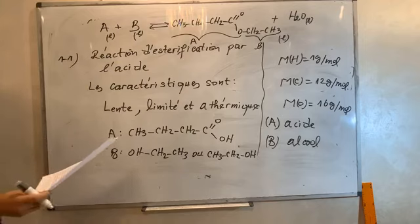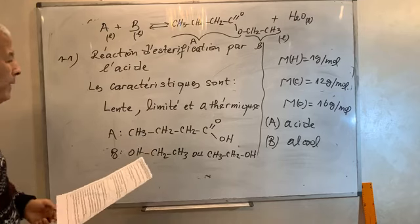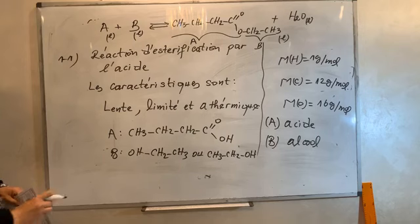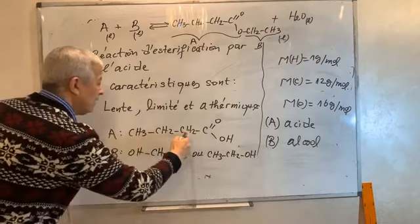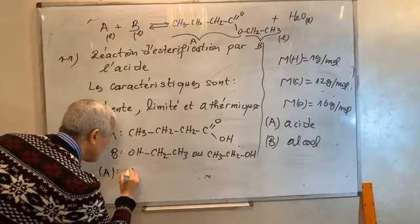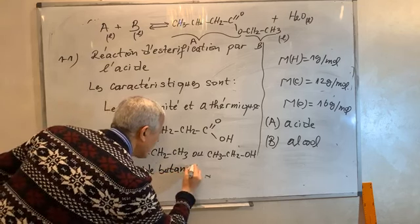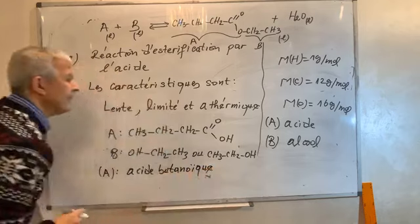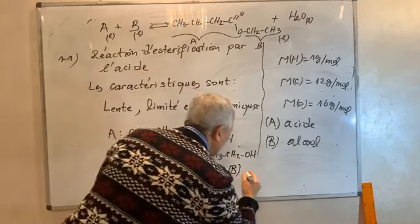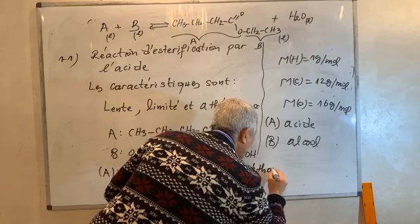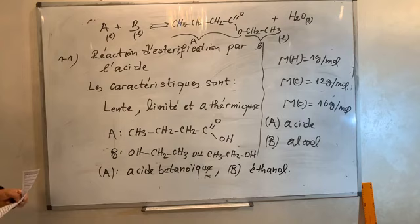Pour les nommer : le réactif A, en comptant 1, 2, 3, 4 carbones, c'est l'acide butanoïque. Le réactif B, avec 1, 2 carbones, c'est l'éthane — donc l'éthanol. Donc les réactifs sont l'acide butanoïque et l'éthanol.